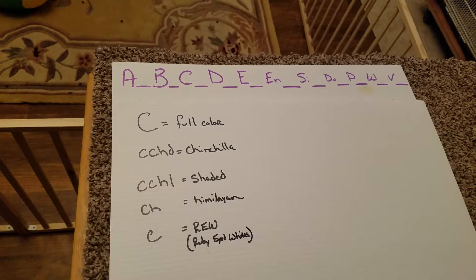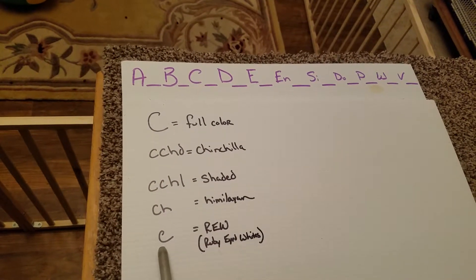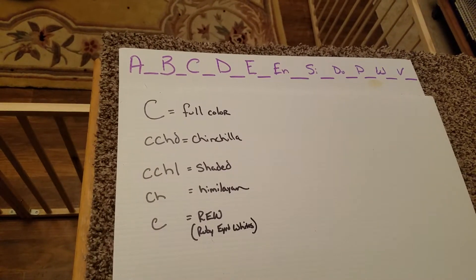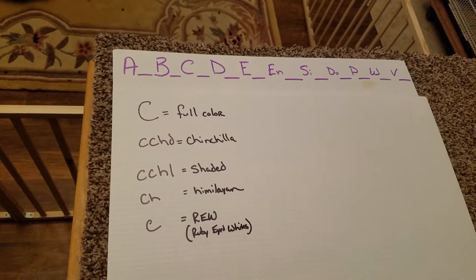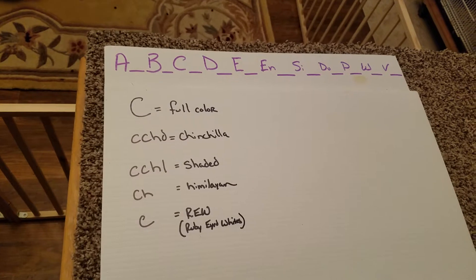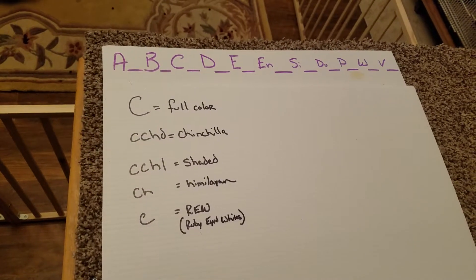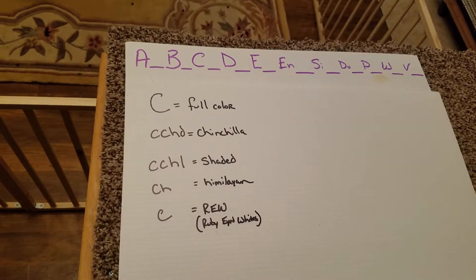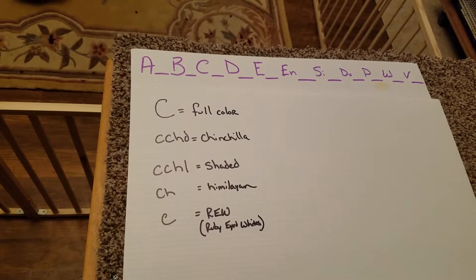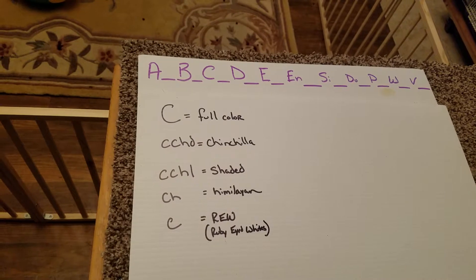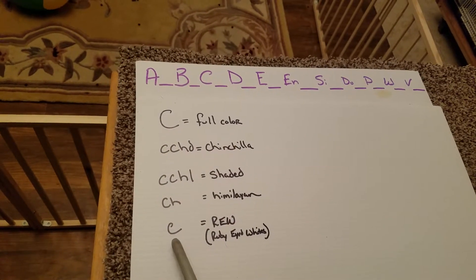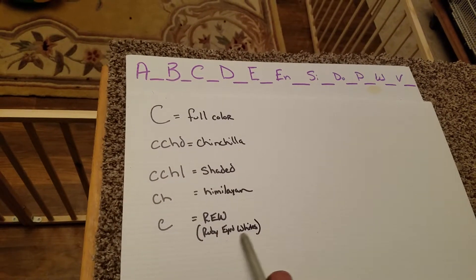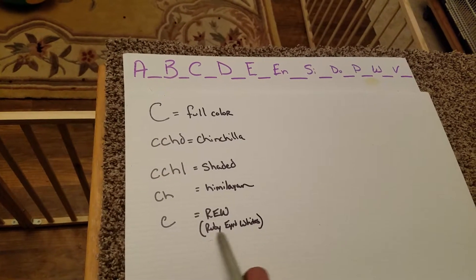And lastly we have a lowercase c, and that lowercase c is going to be responsible for what we call ruby-eyed whites, or REW. Some people refer to them as rews, I call them ruby-eyed whites. Some people call them red-eyed whites. What this allele is doing is it's basically masking our rabbit in nothing but white and removing all that color and hiding it. It will override everything. The only way that you can get a ruby-eyed white is if you have two copies of this gene, of this allele, at the C locus.